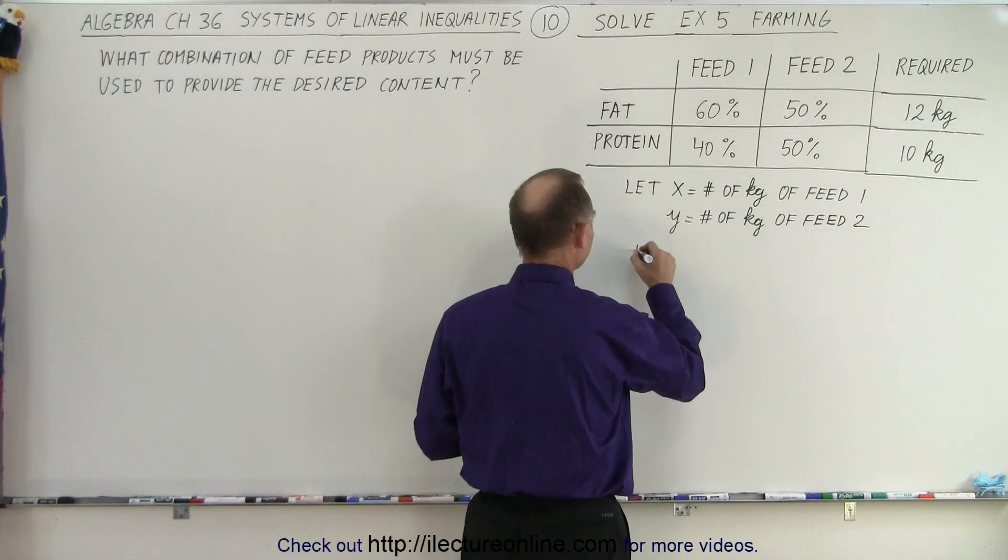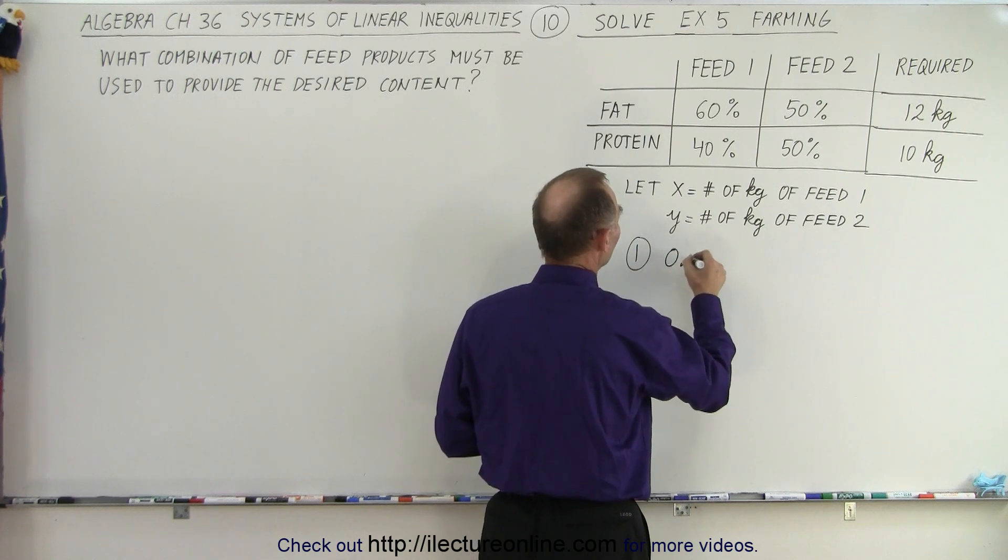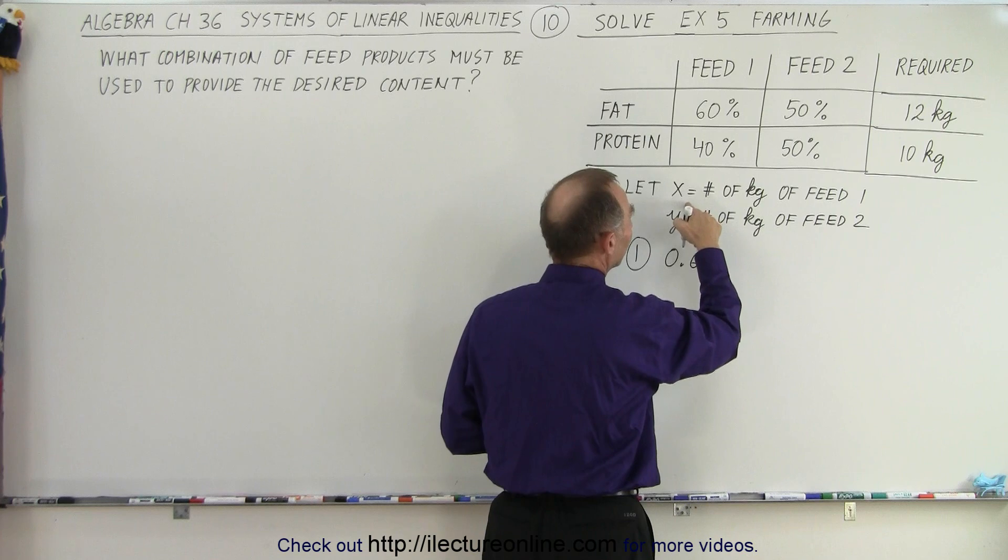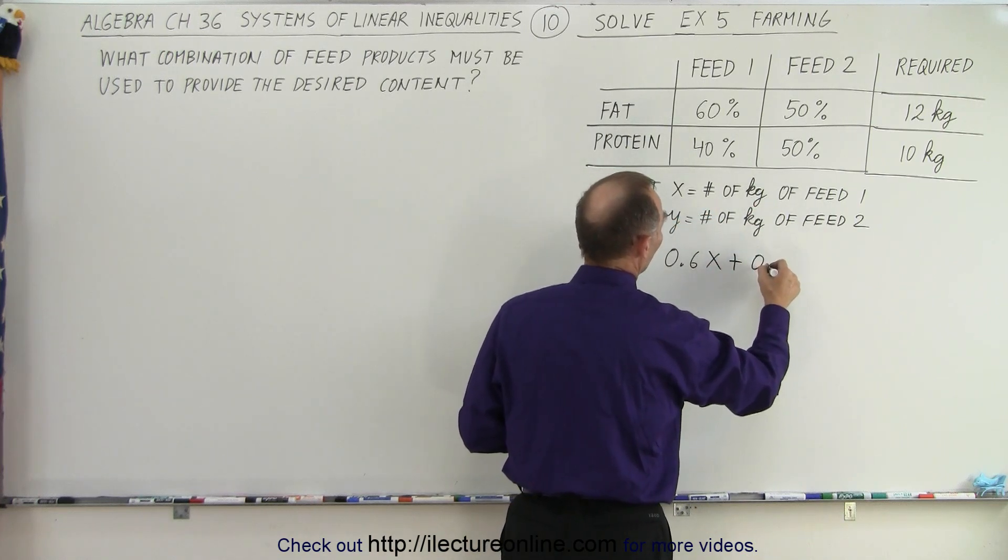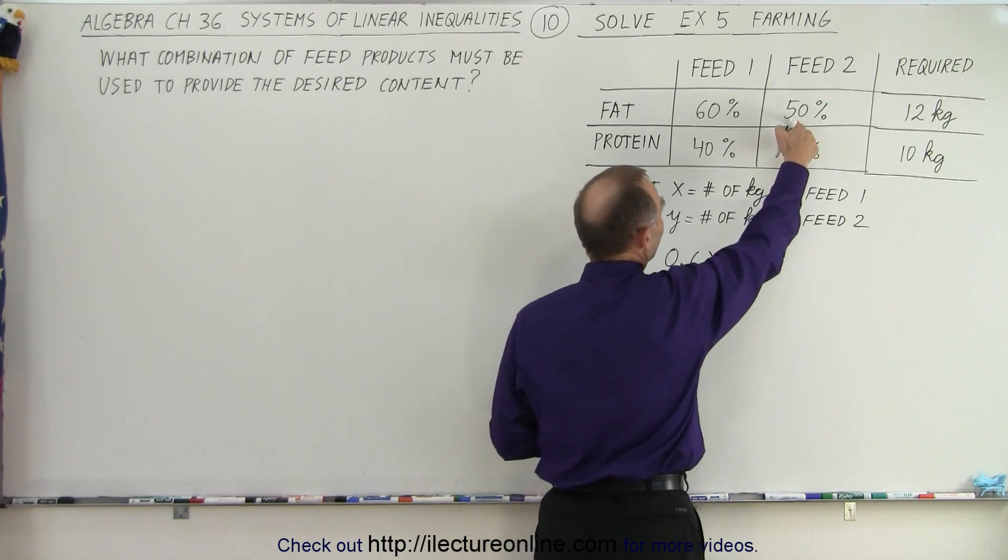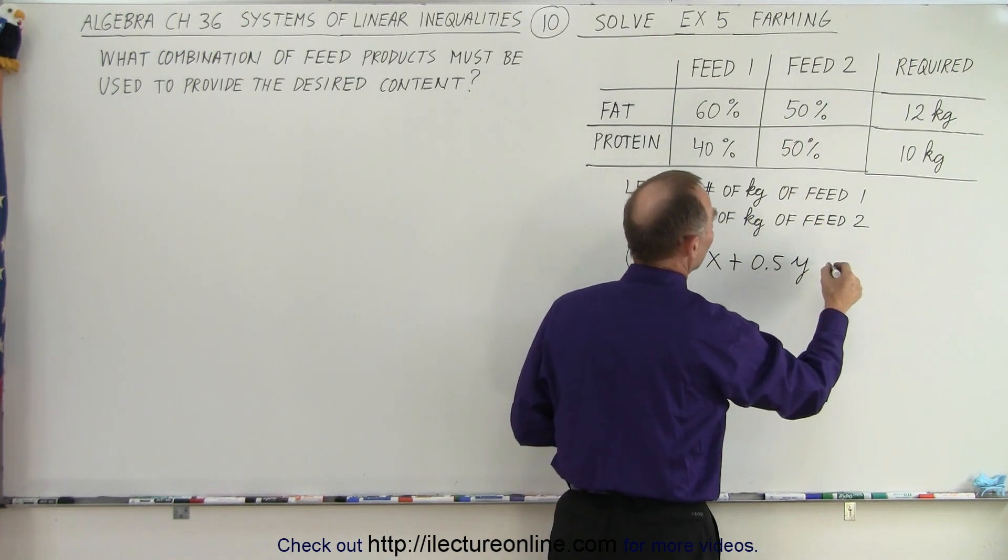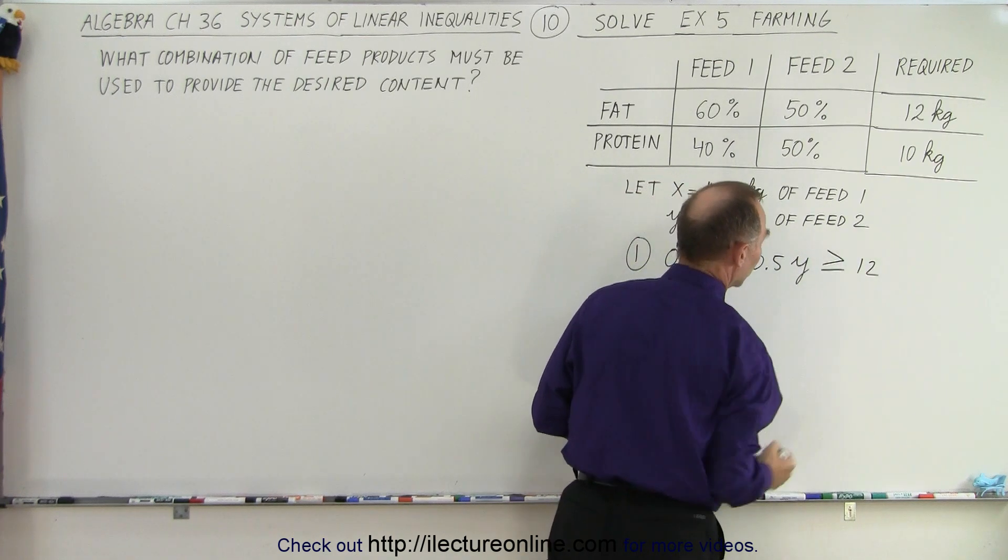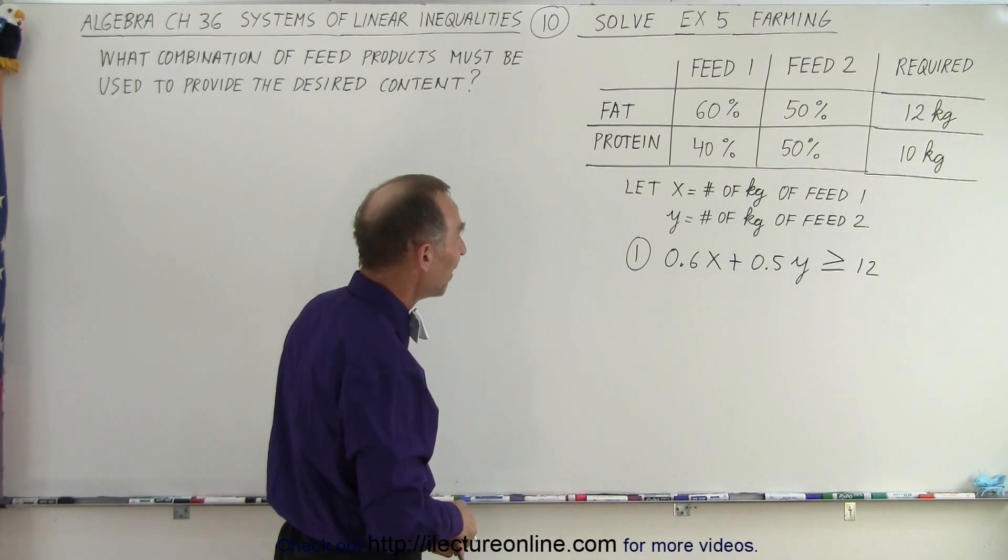So inequality number one, we can write that 0.6, which represents 60%, times the number of kilograms of feed one, which is x, plus 0.5, which represents 50%, times the number of kilograms of feed two, that should be greater than or equal to 12. In other words, we want at least 12 kilograms of the fat.